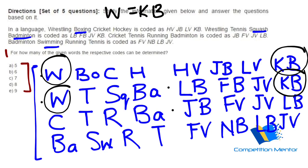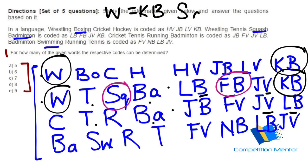There is BA and T common across statements, so you'll be left with S-Q and R. Since BA and T are both common, there must be two common codes. That gives us LB and JV. So Squash will be left with FB — squash SQ equals FB is solved. And we have T and BA, that is Tennis and Badminton, as probable matches.